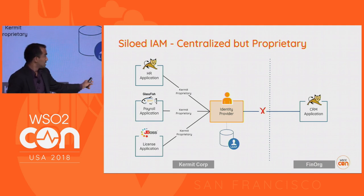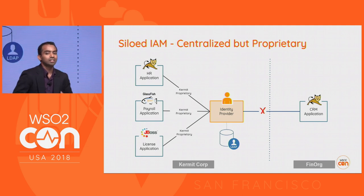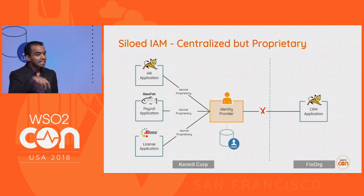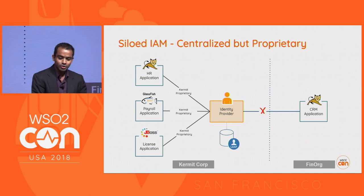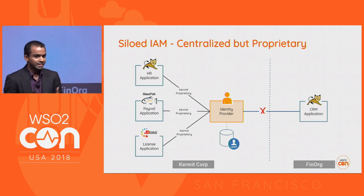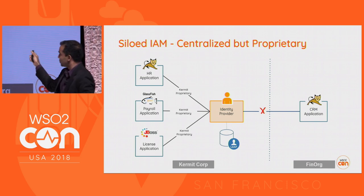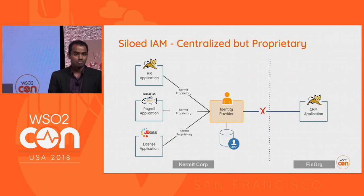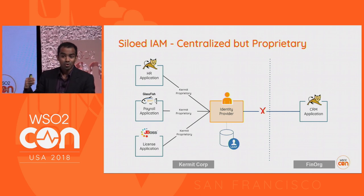These are proprietary APIs. If there are partners of this organization, or if the organization acquires another business or a merge happens, there are external applications that want to provide services to Kermit's users and want to integrate together. But they can't, because they don't know how to talk with the Kermit identity provider — the protocol is proprietary. So there's a blocker for integration and a blocker for business progress.